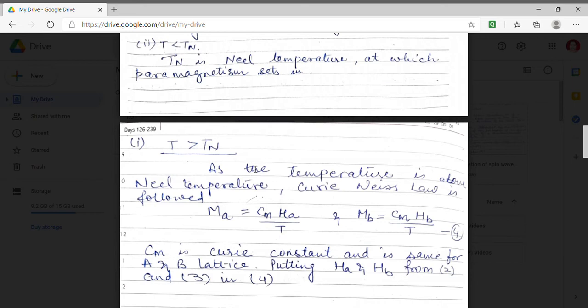That means Curie-Wiese law will be followed. So M will be equal to constant Cm Ha upon T because chi susceptibility which is equal to M by H is inversely proportional to temperature. This is the Curie-Wiese law. Here Cm is Curie constant and it is assumed to be the same for both type of sub-lattice that means A and B.